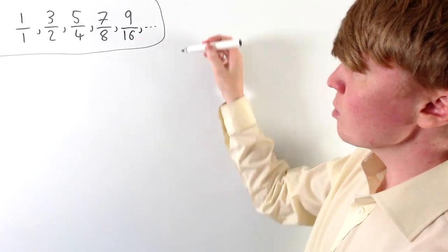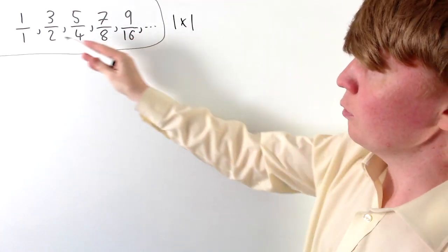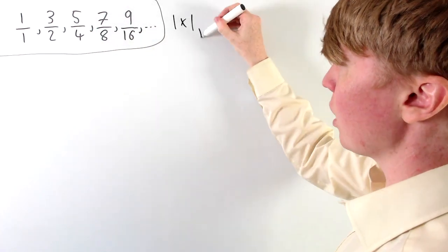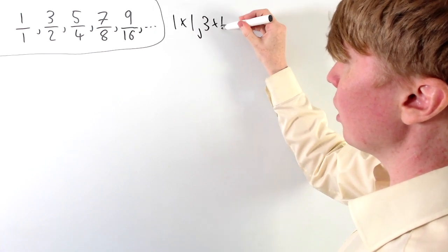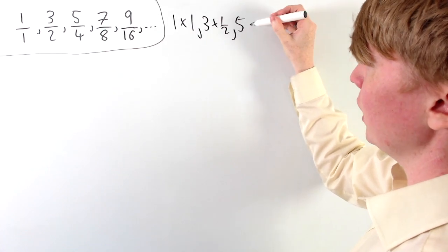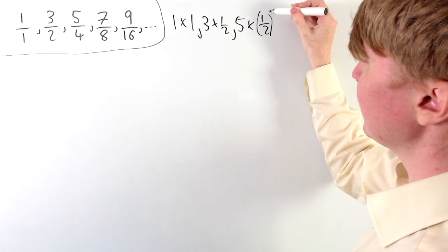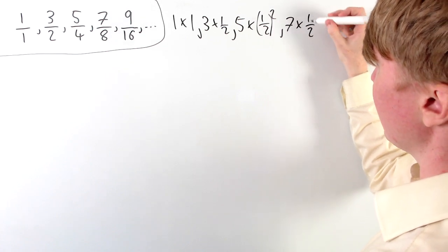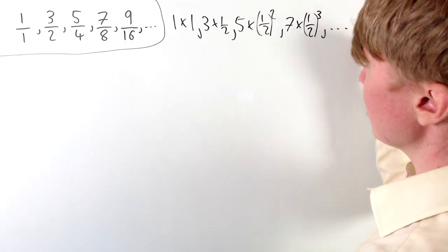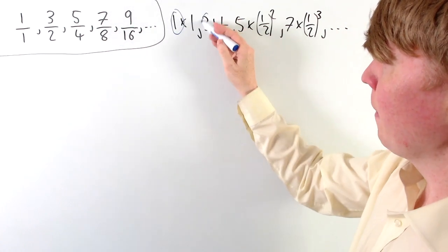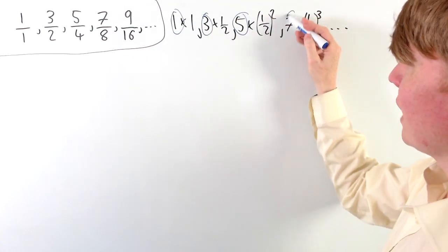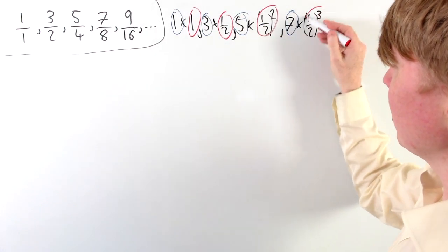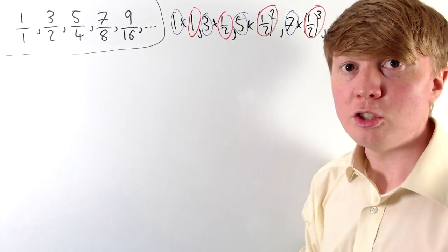The structure becomes clearer if we write the terms not as fractions. The first term is just 1 times 1, the second term is 3 times a half, the third term is 5 times a quarter — or 5 times a half squared — and the fourth term, 7 over 8, can be written as 7 times a half cubed. So the first factors are all part of an arithmetic sequence, while the second factors — 1, a half, a half squared, a half cubed — form a geometric sequence.